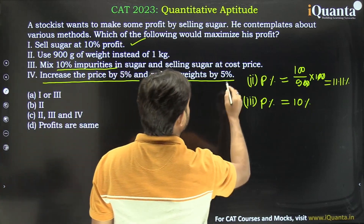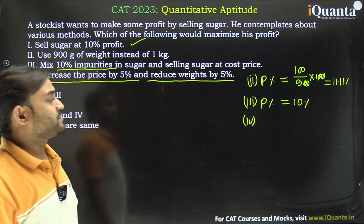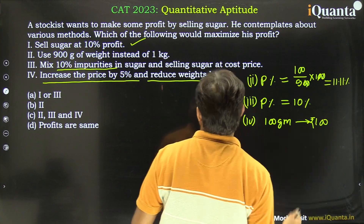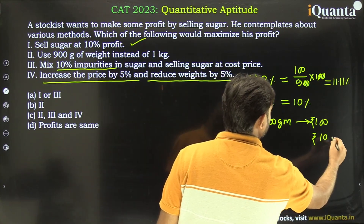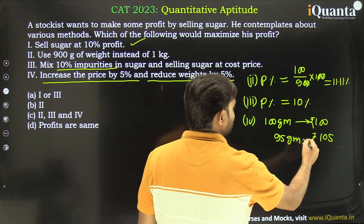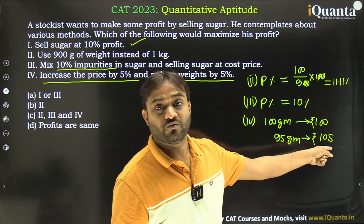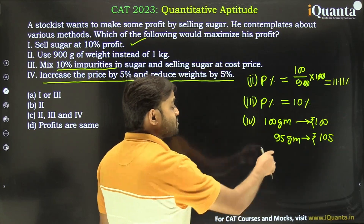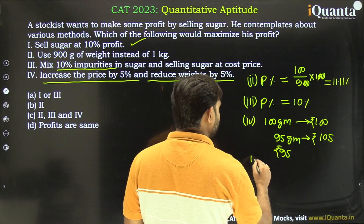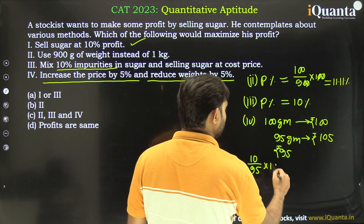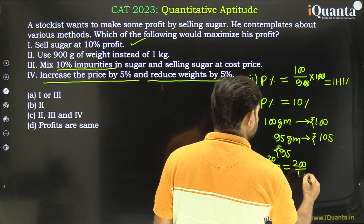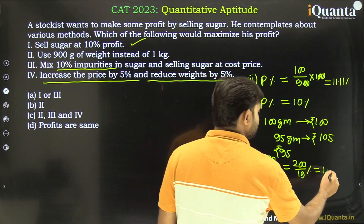The fourth case: increase the price by 5% and reduce the weight by 5%. Say 100 grams costs 100 rupees. Price becomes 105 rupees while he gives only 95 grams. The cost price of 95 grams is 95 rupees. So profit is 10 rupees out of 95 rupees, which equals 200 by 19 percent.